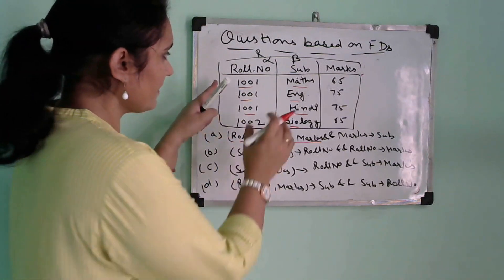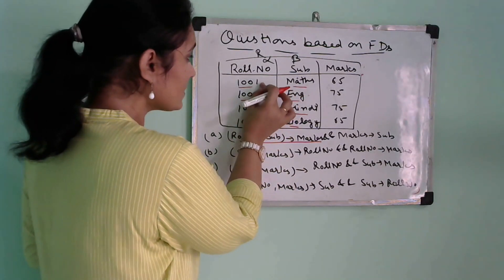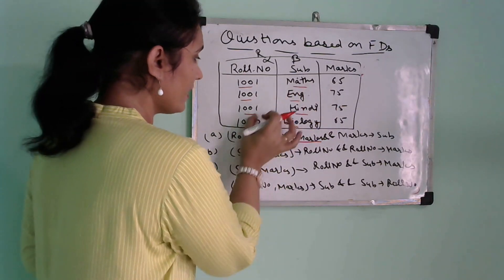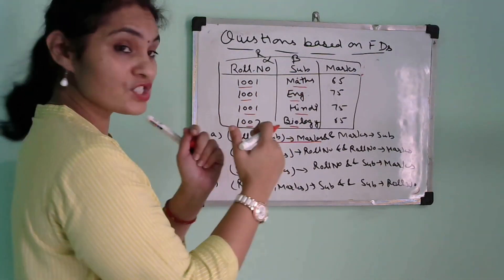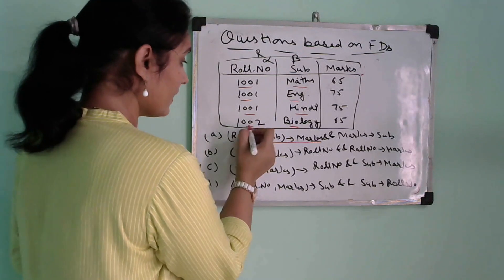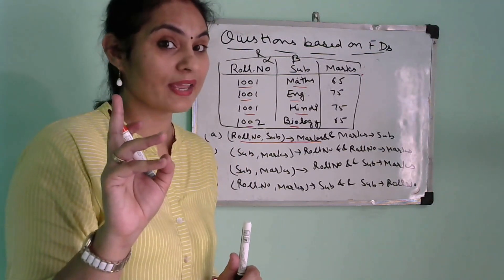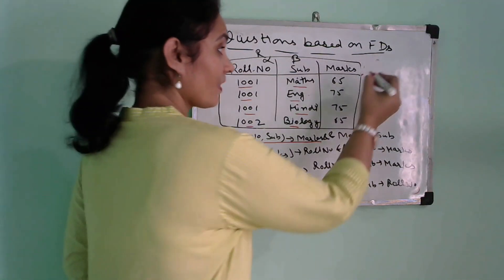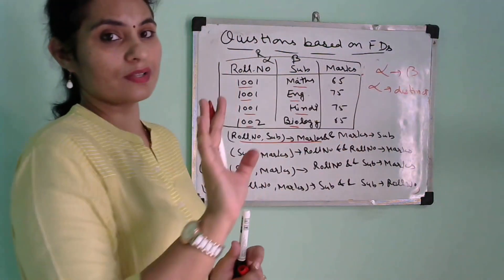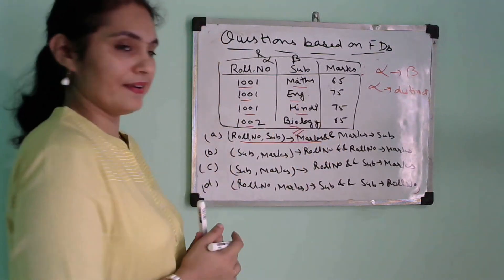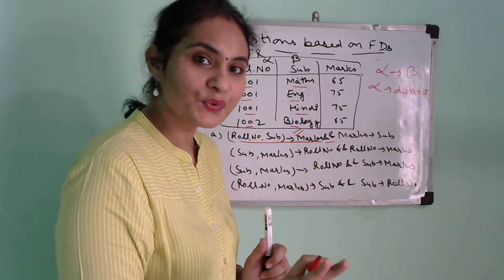Now for Example 1, we check the combination of roll number and subject. Roll number 1001 appears with Maths, English, and Hindi — they are all distinct combinations. So the alpha values here are distinct, meaning this is a valid functional dependency.